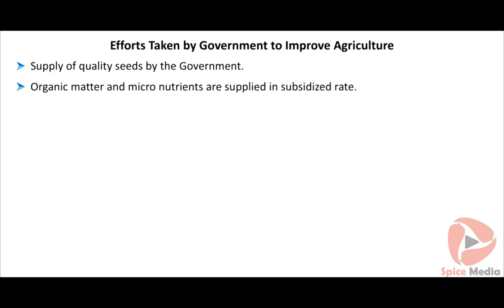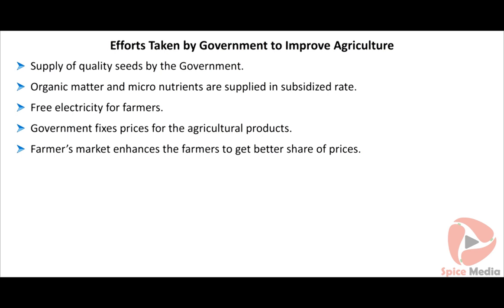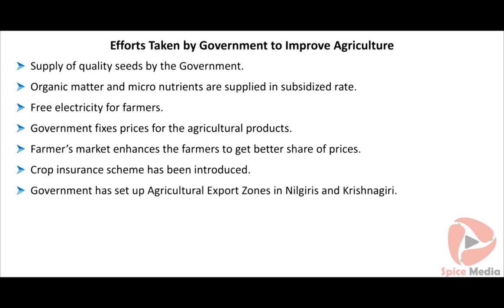The traditional methods of agriculture are slowly being replaced by scientific and technical methods. The Agricultural University in Coimbatore and M.S. Swaminathan Research Foundation are trying to fuse traditional and modern methods.